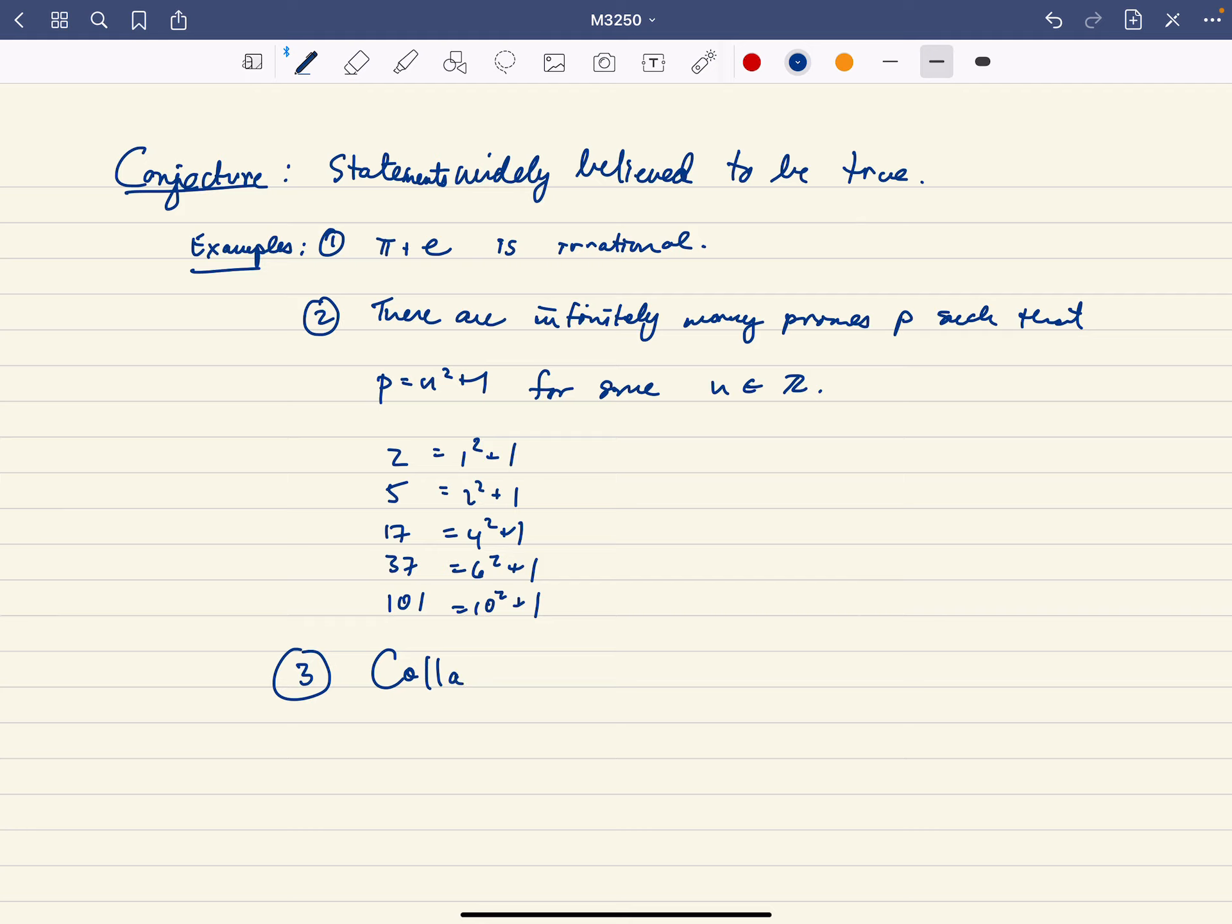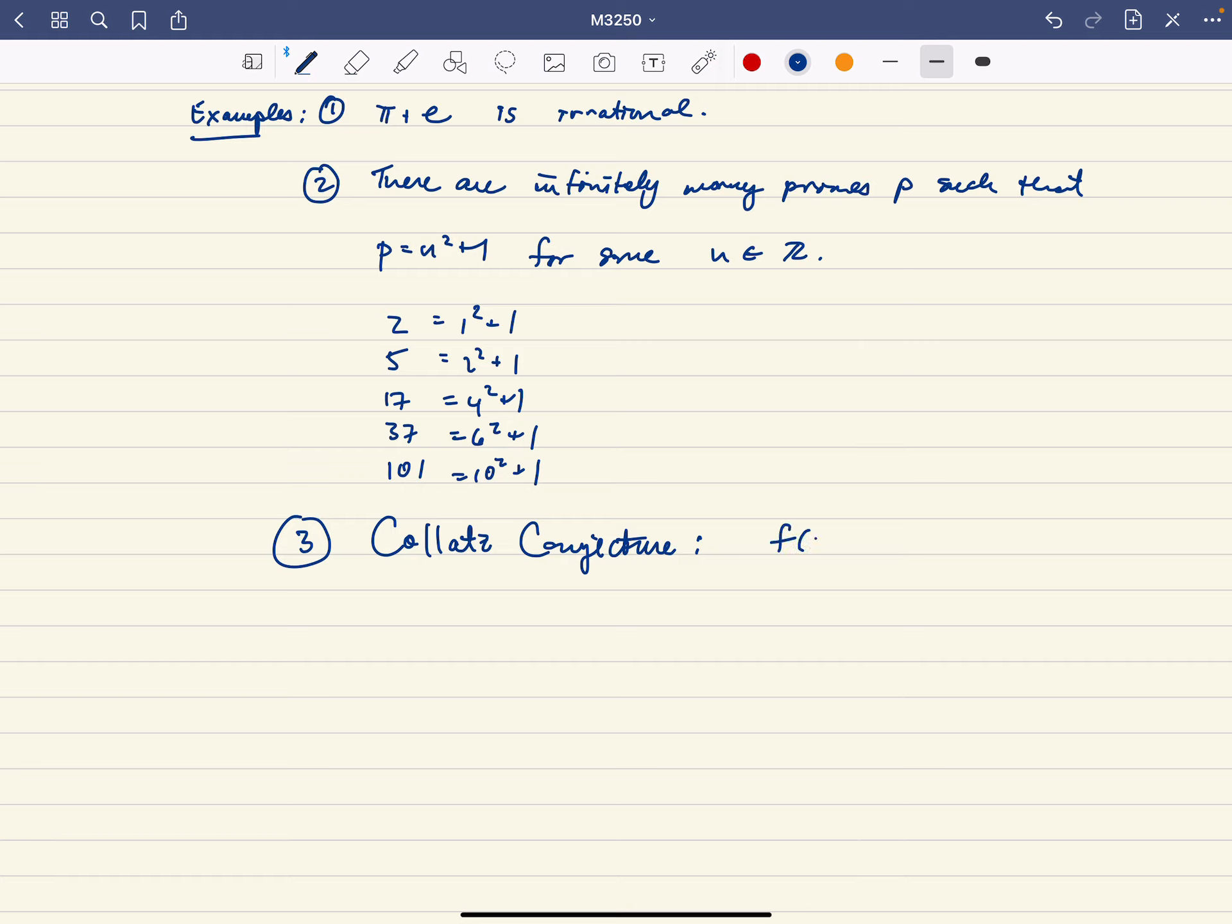You could explain it to a kindergartner, basically. This is called the Collatz conjecture. The Collatz conjecture says what you're going to do is you're going to repeatedly apply this function.